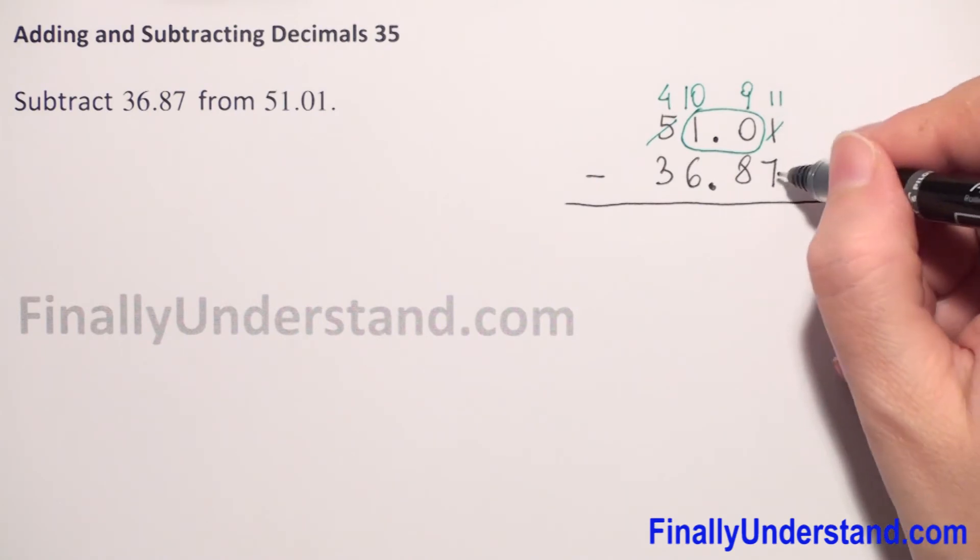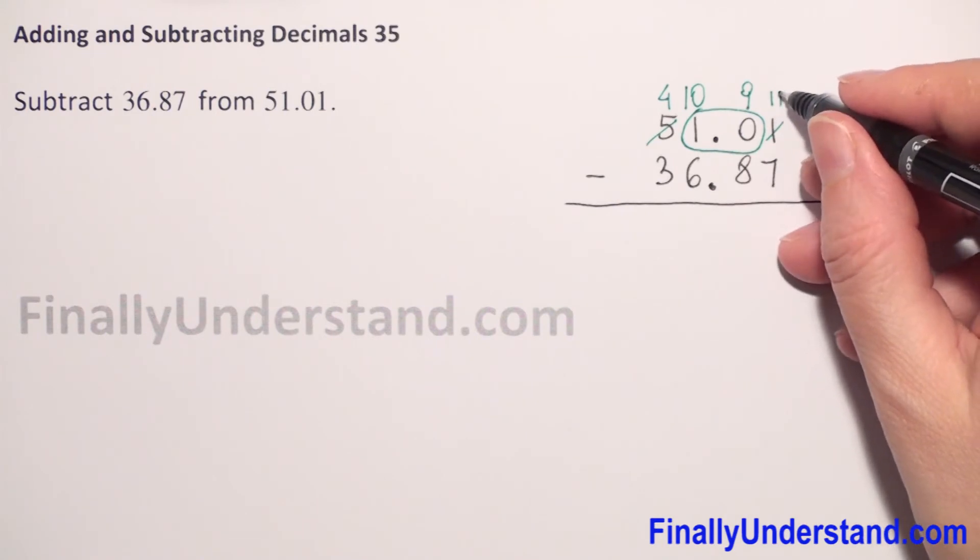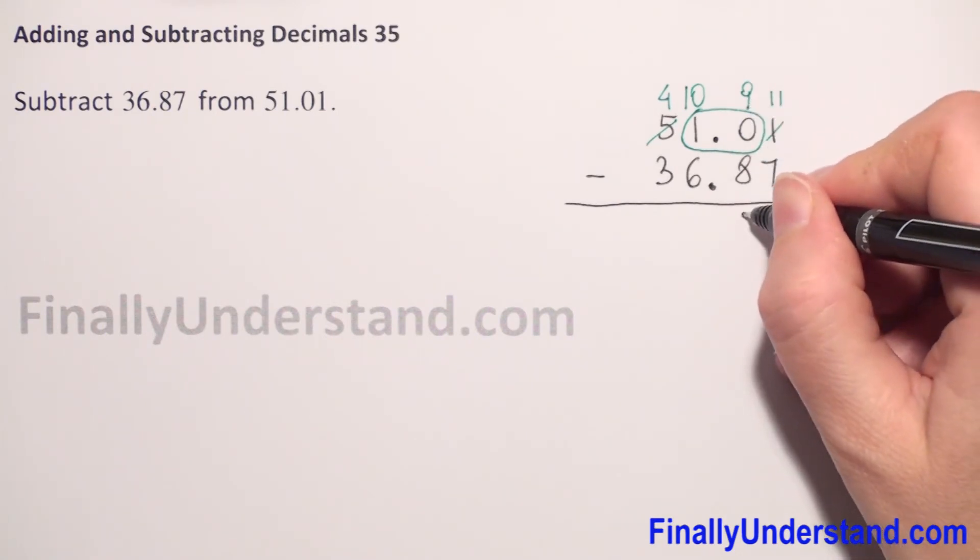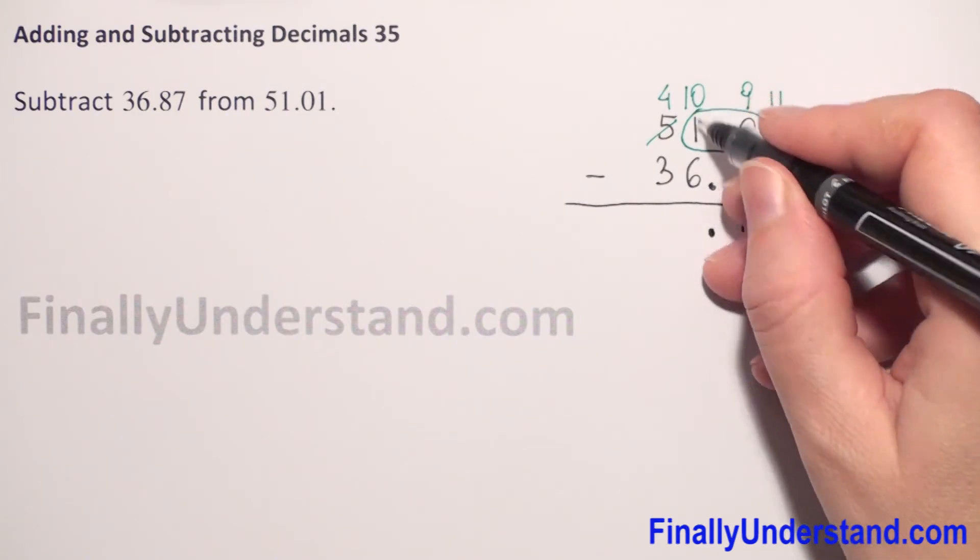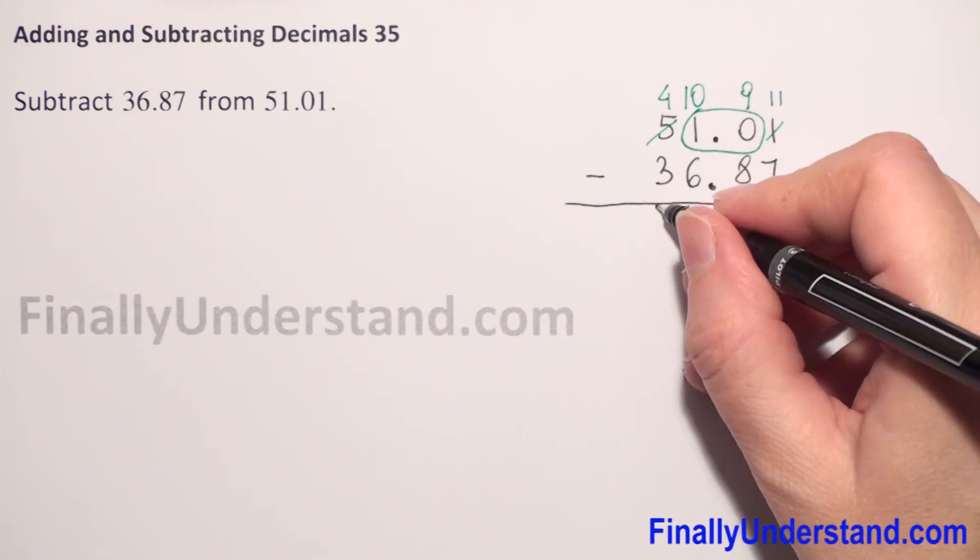We start from the last column and go to the left. 11 minus 7 is 4, 9 minus 8 is 1, keep the decimal point, 10 minus 6 is 4, 4 minus 3 is 1.